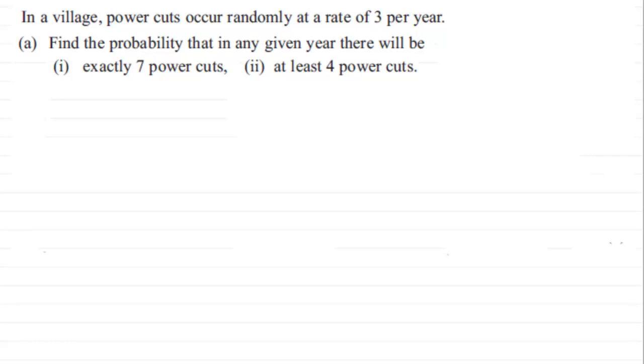What we've got here is that in a village power cuts occur randomly at a rate of 3 per year. And what we've got to do is find the probability that in any given year there will be exactly 7 power cuts and at least 4 power cuts.